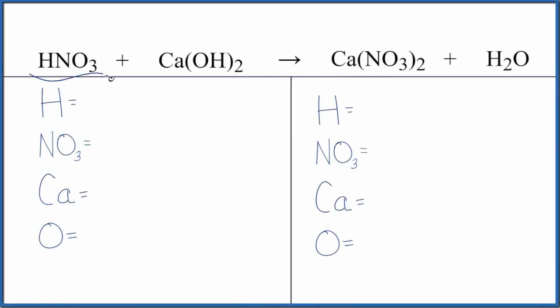Let's balance the equation for HNO3 plus Ca(OH)2. This is nitric acid and this is calcium hydroxide. We'll also talk about the type of reaction and we'll write the states.